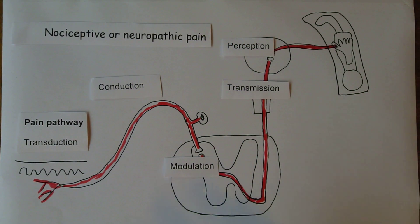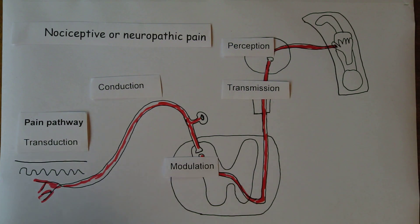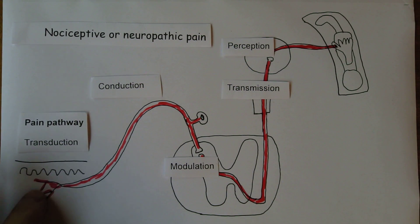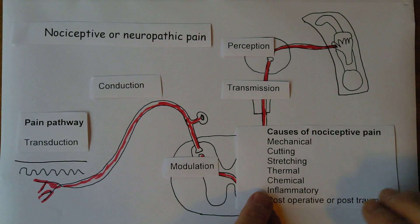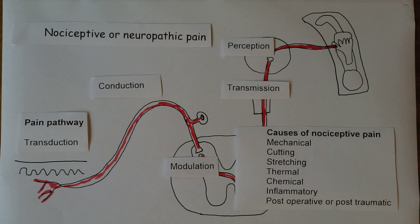This is quite complicated, and this is just a spinal example — there are cranial nerves as well which work similarly but don't go via the spinal cord. Pain begins with the transduction of tissue damage at the level of the nociceptors. Many things can cause this: mechanical things like cutting and stretching, heat, cold, chemicals, inflammatory chemicals, post-operative and post-traumatic stimuli.